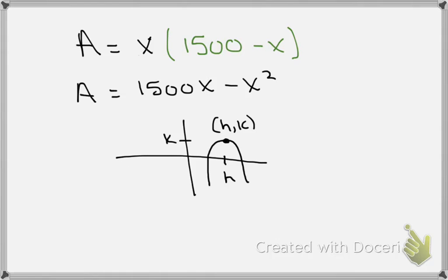We recognize this as a parabola that opens down, which is good because we're looking for a maximum. This parabola has a vertex at (h, k). The vertex must be in the first quadrant because h represents x, a dimension of the fence, which is definitely positive, and k represents the enclosed area, which is also positive.